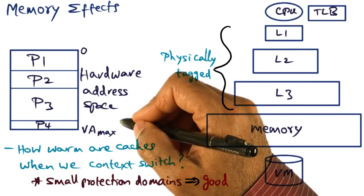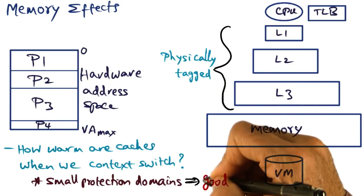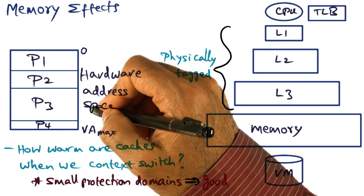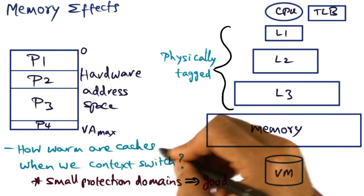And a microkernel can also win for small protection domains by packing multiple small protection domains in the same hardware address space.